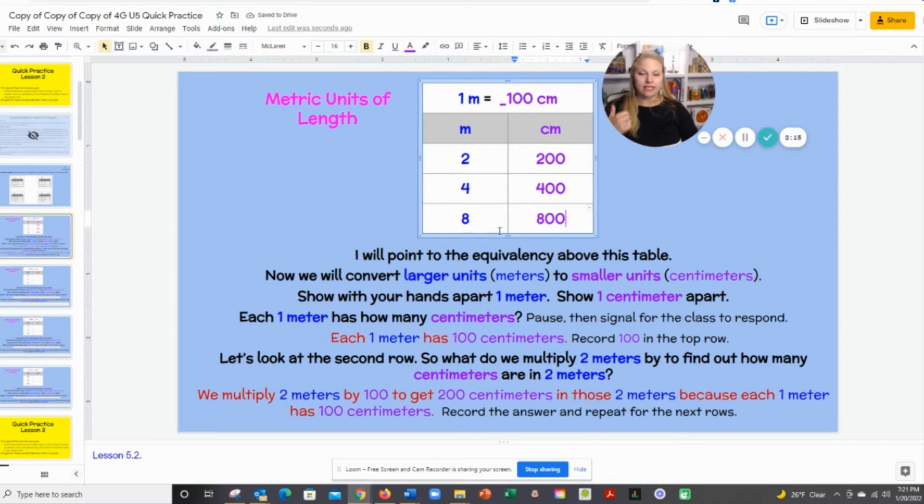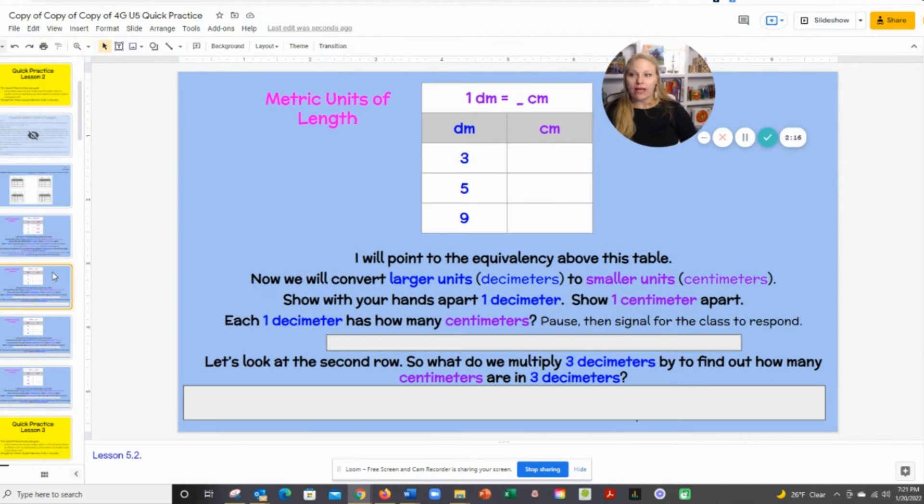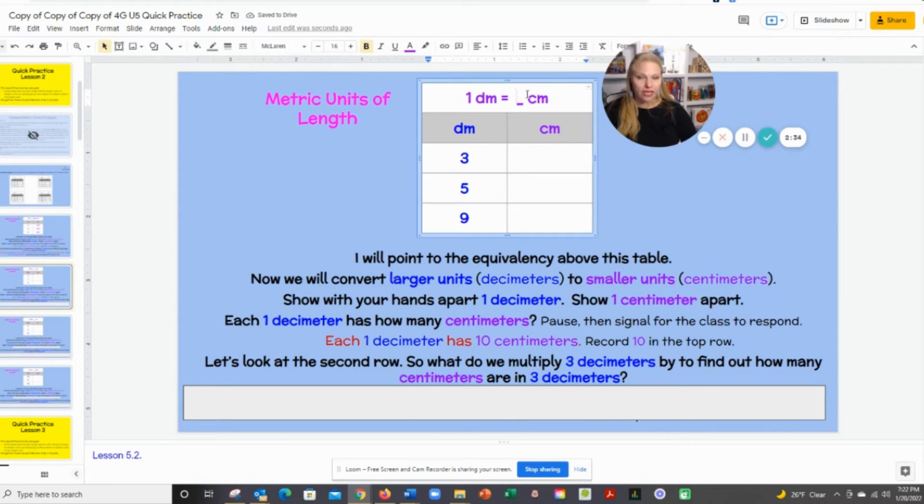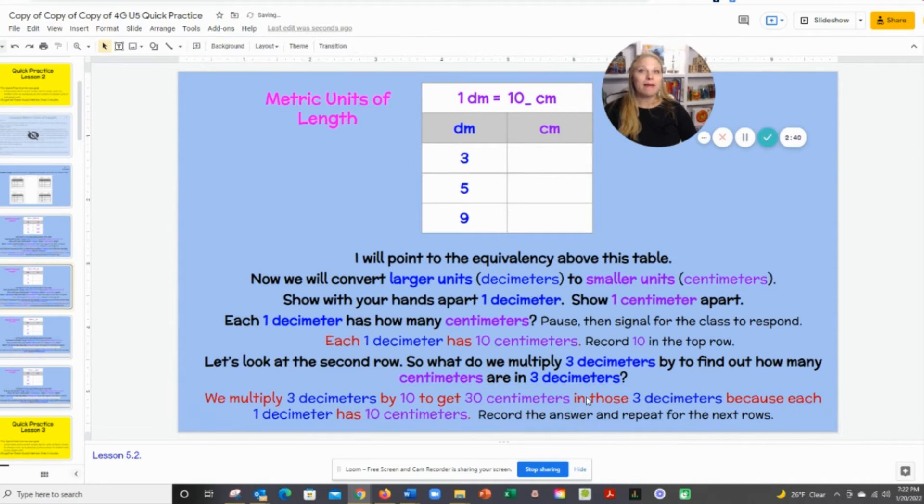We move to the next slide. I'd move to the next slide. Boys and girls, we're going to convert from larger units, decimeters, to smaller units, centimeters. Boys and girls, how many centimeters are in a decimeter? Class, 10. Boys and girls, what am I going to do to 3 decimeters to get to how many centimeters? Class, multiply by 10.